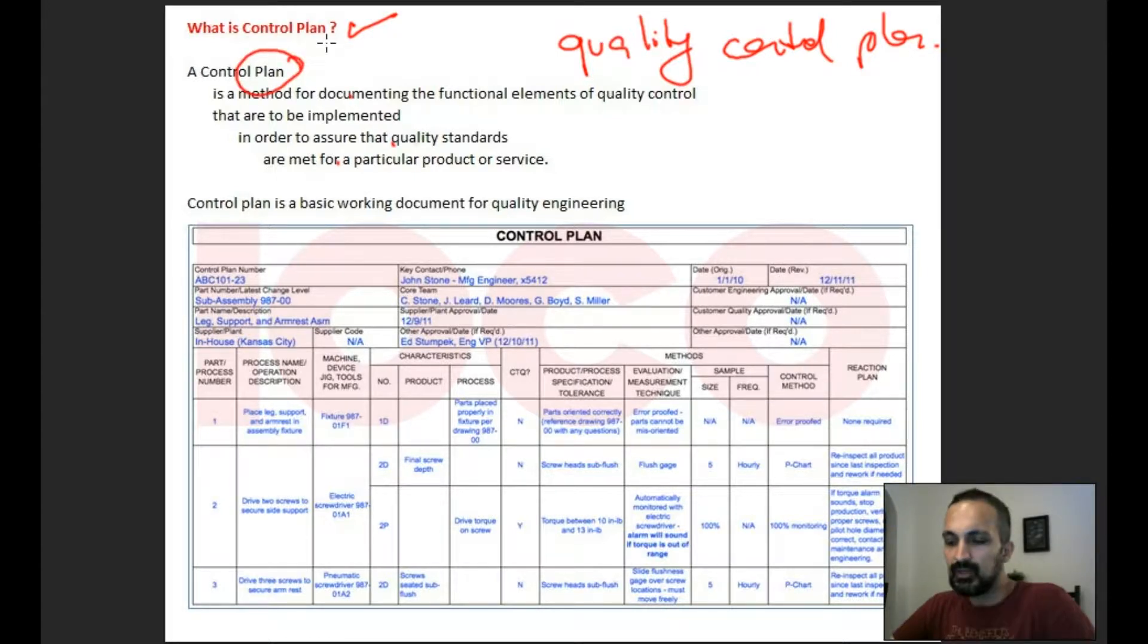A plan that shows customers how you guarantee the quality requirements and customer requirements. Let me read the explanation: a Control Plan is a method for documenting